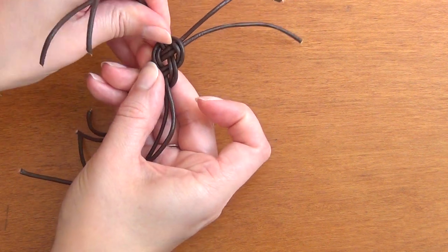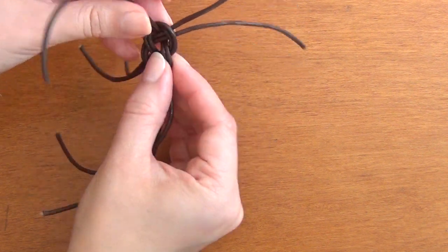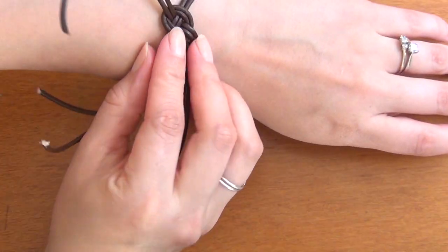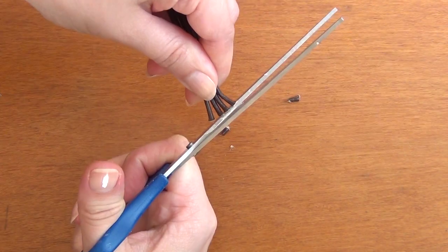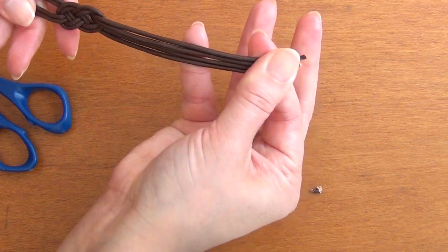Once you're satisfied with however many laces you've added in, you can push and pull on the various ends of strings to make sure all the legs are roughly the same length. Then you can trim off any minute discrepancies and you're ready to finish off your bracelet.